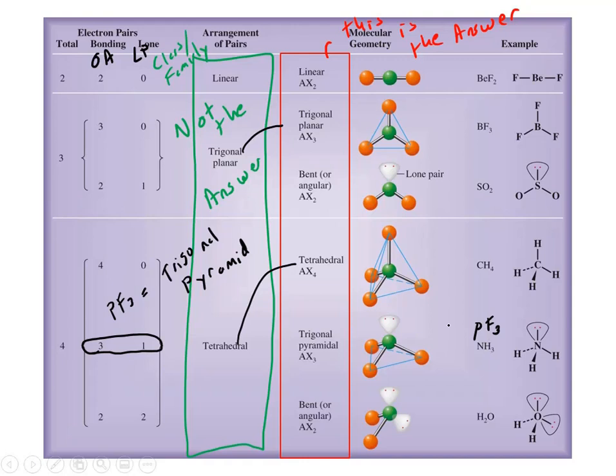And so basically I suggest note cards or however method you want to do. But what you have to know is three and zero is trigonal planar, two and one is bent, four and zero is tetrahedral, three and one is trigonal pyramid, two and two is also bent. There's two bents. There will also be two linears. Those are the only two that repeat.